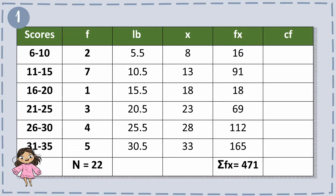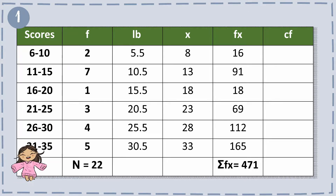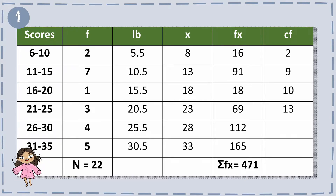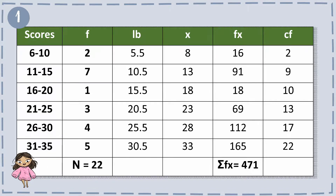Lastly, the cf. In finding the cf, all you have to do is add the frequency value cumulatively. So the first one is 2, then 7 plus 2 equals 9, 9 plus 1 equals 10, 10 plus 3 equals 13, and so forth. Remember that the last value of the cf must match the total frequencies, which is 22.